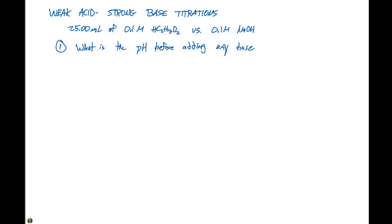The first point we're going to look at is what is the pH before adding any base. Remember that when we have a weak acid, it's gonna be in equilibrium with H plus plus C2H3O2 minus. The Ka for this particular expression is 1.8 times 10 to the minus 5.